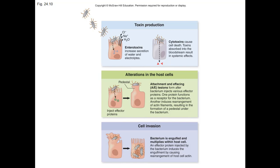Dysentery is a diarrheal illness where pus and blood are present in the feces, indicating damage to the intestinal walls. Enteric fever usually occurs after the initial infection with certain strains of Salmonella, causing severe headaches, high fevers, abscesses throughout the body, intestinal rupture, shock, and death. Typhoid fever is an enteric fever caused by Salmonella typhi bacteria.